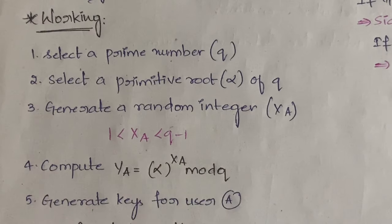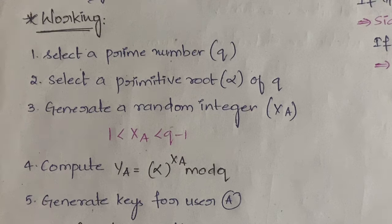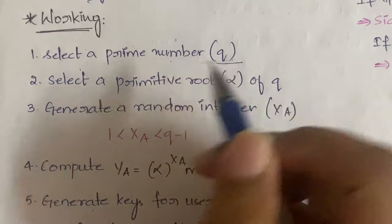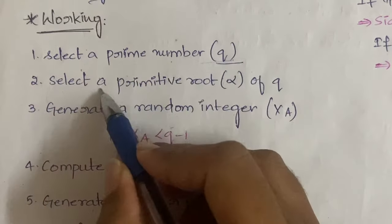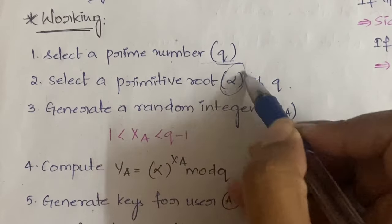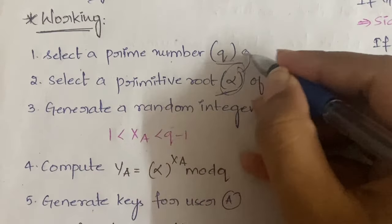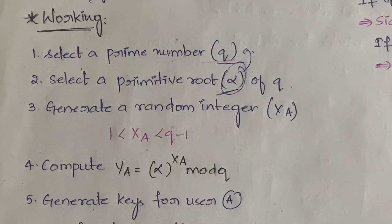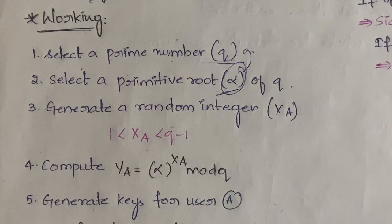Before watching this video, I highly recommend you watch the Diffie-Hellman key exchange algorithm video, because ElGamal depends on that. First, you need to select a random prime number q, and then select a primitive root of q, denoted by alpha. To understand what a primitive root is, watch the Diffie-Hellman video.